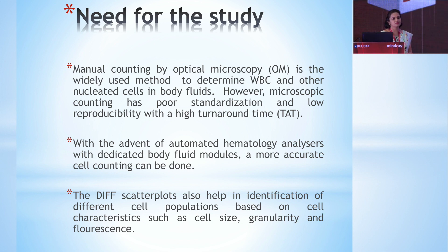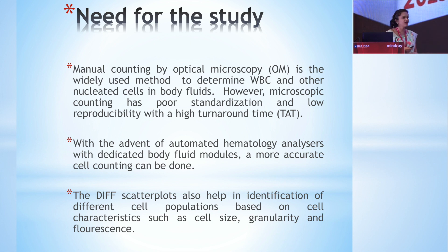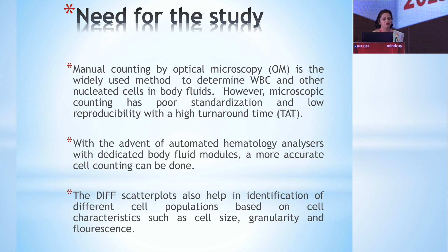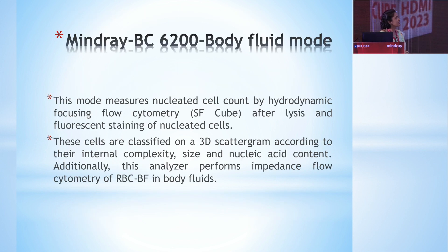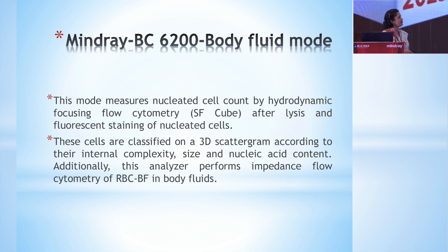With the advent of automated hematology analysis, we now have dedicated body fluid modes. More accurate cell counting is possible, and the diff scatter plots along with counting help in identification of different cell populations based on cell characteristics such as cell size, granularity, and fluorescence. In the BC6200 body fluid mode, this measures the nucleated cell count by hydrodynamic flow cytometry SFQ technology after lysis and fluorescent staining of the nucleated cells.